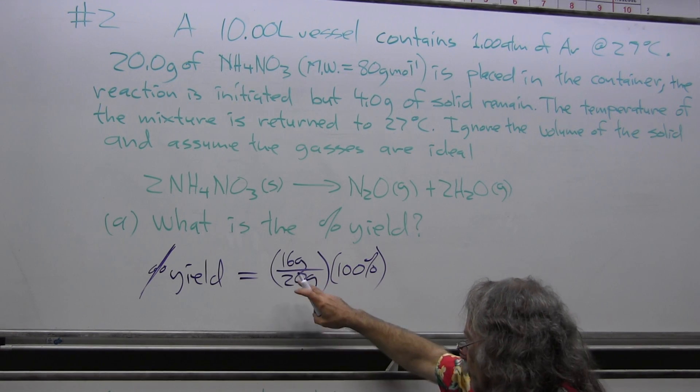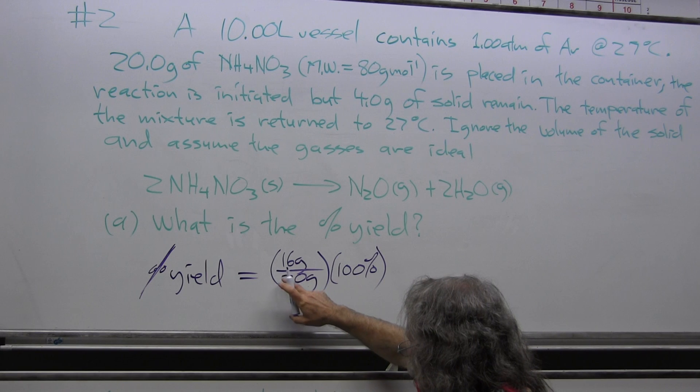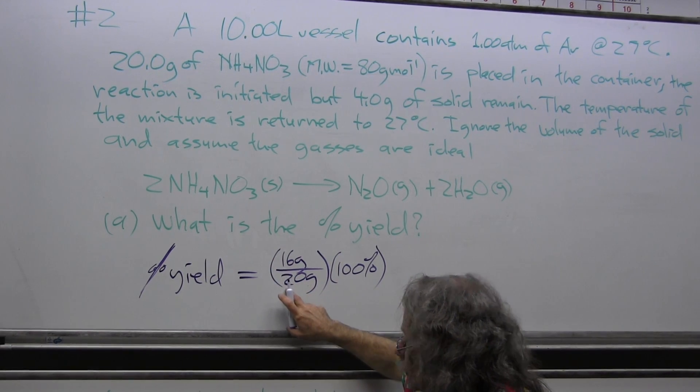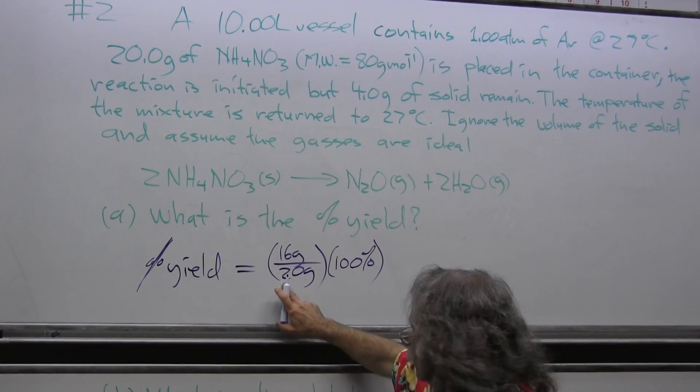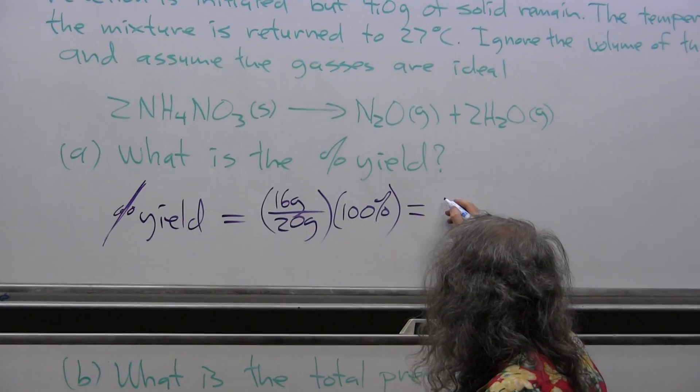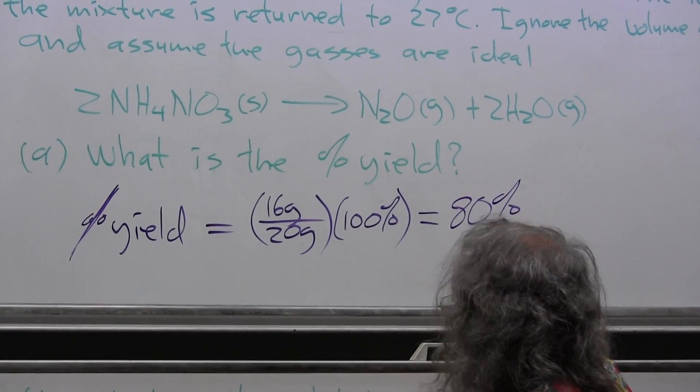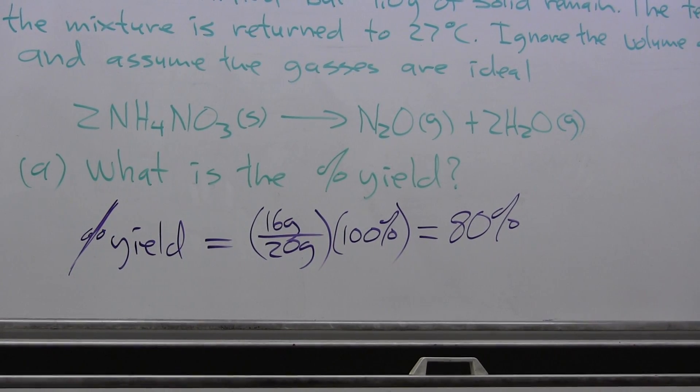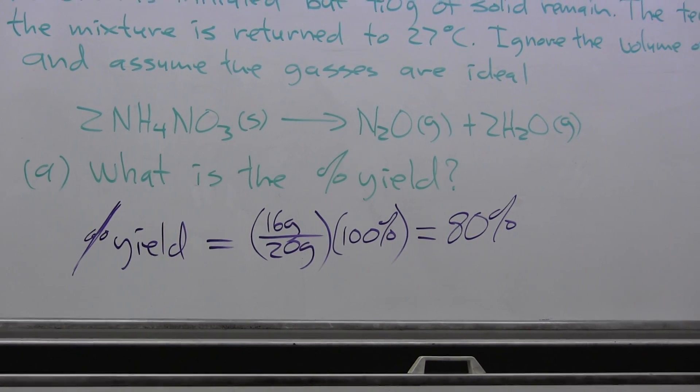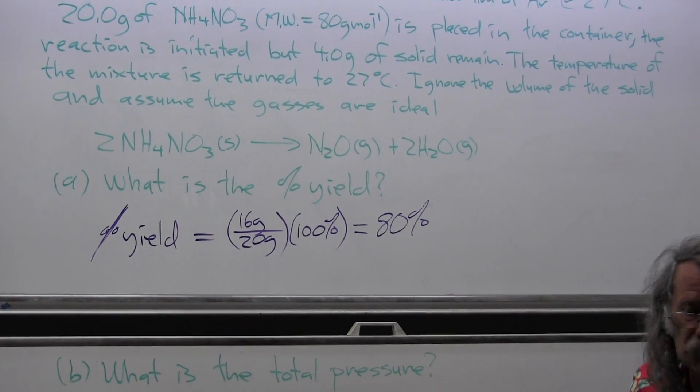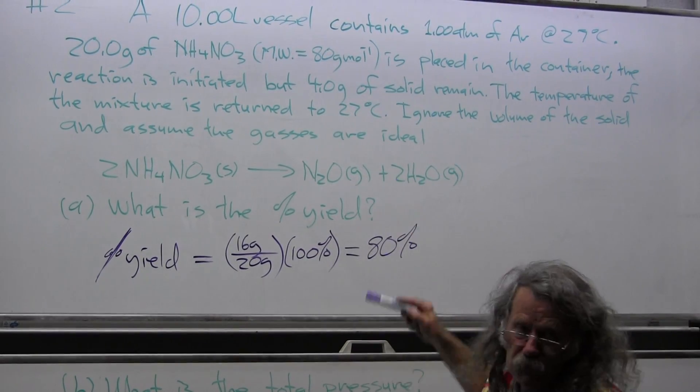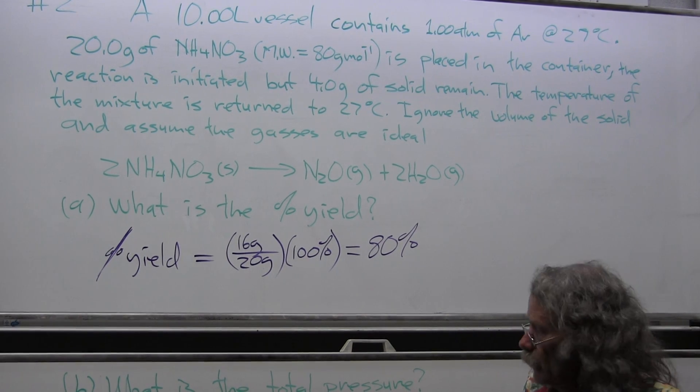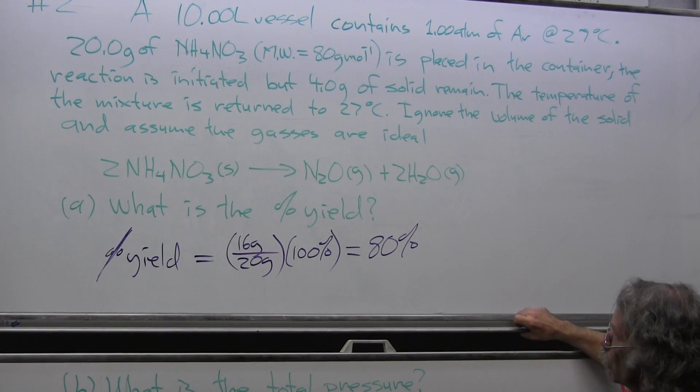And 16 divided by 20 simplifies to 4 over 5, which is 80%. I put that in there just for fun. It wouldn't be the way we normally would approach a percent yield, but because this is a simple decomposition reaction and we can assume that all the products are the product gases and that the remaining solid is unreacted starting material. That's part A.